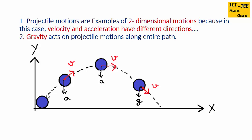We can draw the velocity vector at any point by drawing tangents. In projectile motion the object follows a curved path, so we need to draw the tangent to get the velocity vector. For example, at this point the tangent would be like this, and that tangent shows the velocity vector. At another point, this is the tangent and it shows the velocity vector of the object at that point.